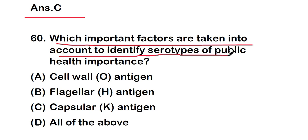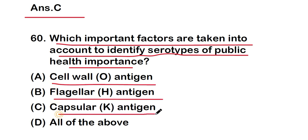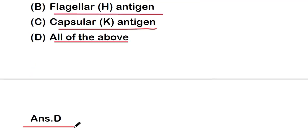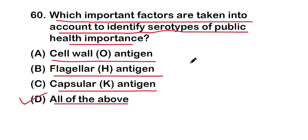The last question: which important factors are taken into account to identify serotypes of public health importance? Options are: cell wall O antigen, flagellar H antigen, capsular K antigen, or all of the above. The right answer is option D — all of these antigens are important factors taken into account to identify serotypes of public health importance. These are all 20 questions of this video — thank you for watching.